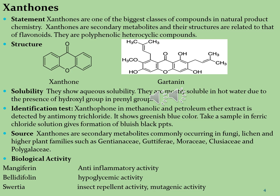Xanthones are found in different plant families including Bontiaceae, Clusiaceae, Podostemaceae, and others. They are also found in some species of the genus Iris. Some xanthones are found in the pericarp of the mangosteen fruit, Garcinia mangostana, as well as in the bark of different plants. Xanthones are used for antioxidant, anti-tumor, anti-allergic, anti-inflammatory, antibacterial, antifungal, and antiviral activities.